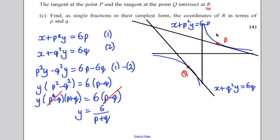Now, to get x in terms of p and q, you would just substitute this back into one of the equations and work it out. So we would substitute this, let's say, back into this equation. So we'd get x + p²(6/(p + q)) = 6p.